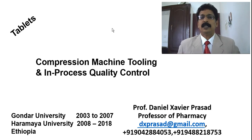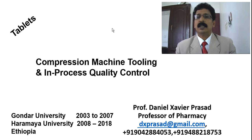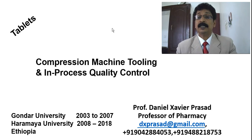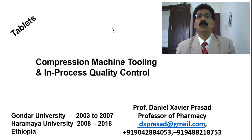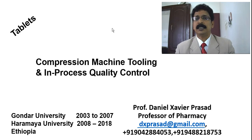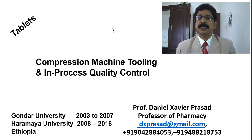I am continuing the lecture on tablets from the past two lectures. We have discussed definitions, evaluation of tablets, and in the last lecture we covered the compression machine — single compress and multipress technology, how it works, and all the basic things. Now we are going to tooling and in-process control. In the in-process quality control evaluation we have already seen hardness, friability, dissolution, and disintegration tests.